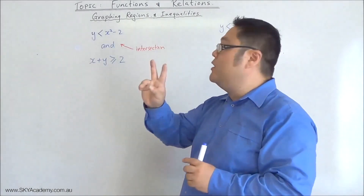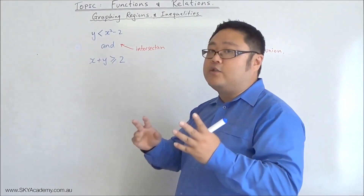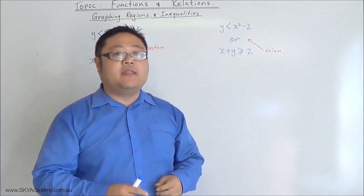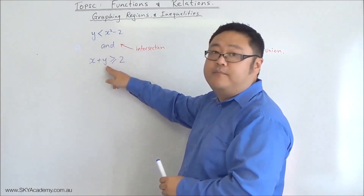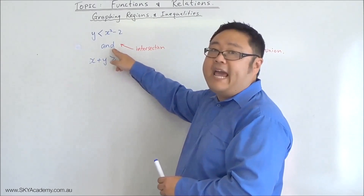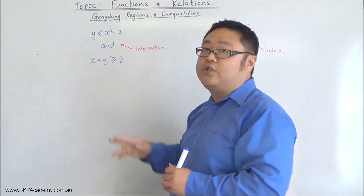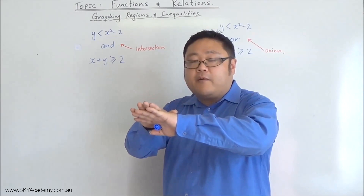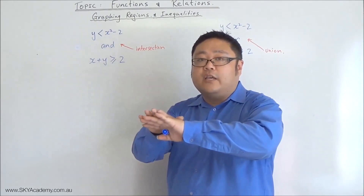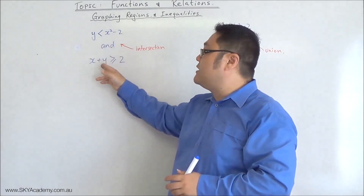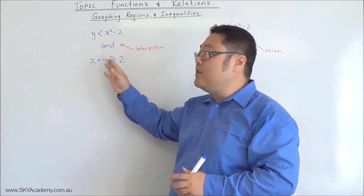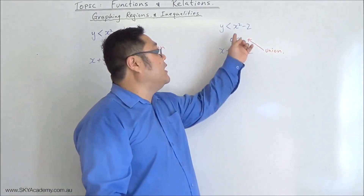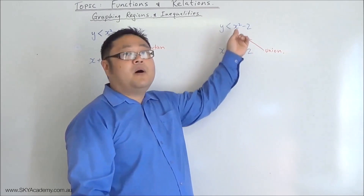We're going to look at two words that make all the difference in the world — those two words are 'and' and 'or'. If you've got two regions and you use the word 'and', you're talking about the intersection of regions — in other words, where they overlap. That overlap area is all you're interested in; you're not interested in the parts that satisfy one but not the other. You're only interested in the common region between both.